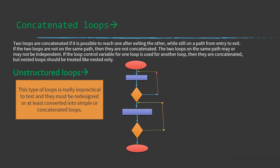The last type is unstructured loops. This type of loop is really impractical to test and must be redesigned or at least converted into simple or concatenated loops. Basically, it is a combination of nested and concatenated loops — a group of loops that are in no particular order.